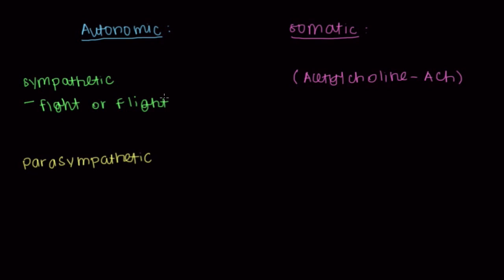You start pumping adrenaline through your body and get your heart to beat faster so you can pump more oxygen to your legs to help you run quicker and get away. Adrenaline is an endocrine hormone secreted to help with this, but it also has a neurotransmitter friend that does the same thing — not adrenaline, but noradrenaline. Another term for that is norepinephrine. So norepinephrine, or noradrenaline, is the neurotransmitter used by the sympathetic nervous system.